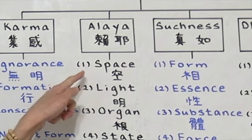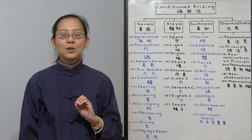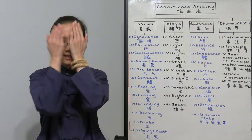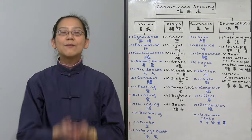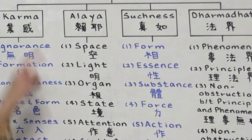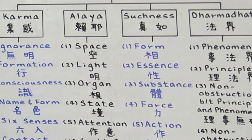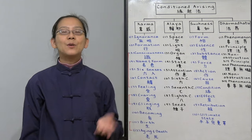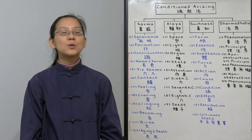The development of our eye consciousness takes nine preconditions in order for us to see something. Number one, we need space as a condition. You cannot see if something is attached to your eyes like this. You have to have a little distance. We call it space. Number two, we need to have light. If you are in the dark, you won't be able to see.